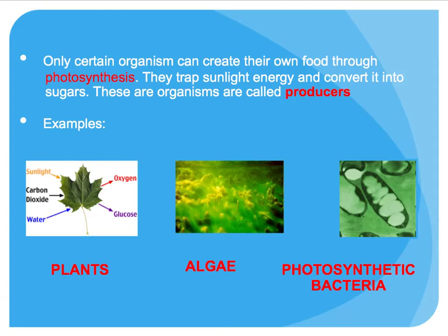Only certain organisms can create their own food through photosynthesis — the process of trapping sunlight and converting it into sugars. Organisms that do this are called producers. Plants are the main photosynthetic organisms; they take in sunlight, carbon dioxide, and water and produce oxygen and sugars (glucose). Algae and some bacteria are also able to photosynthesize.